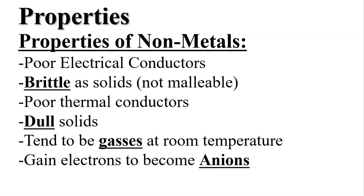Your properties of non-metals: they're poor conductors, they're brittle as solids, so they're not malleable. They're poor thermal conductors, they're dull solids, they tend to be gases at room temperature, and they gain electrons to become anions.